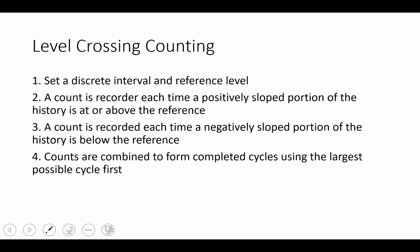Let's start with level crossing counting. This is where we count each time a positive slope passes a certain portion of the history. And we keep counting up for each along the positive slopes, as well as along the negative slope portions. And then we combine those counts to produce completed cycles.